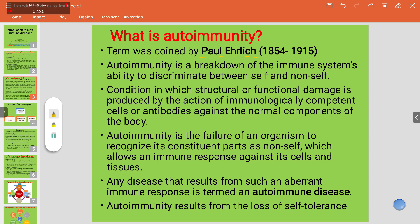Autoimmunity is a breakdown of the immune system's ability to discriminate between self and non-self. These are conditions where structural or functional damage is produced by the action of immunologically competent cells or antibodies against the normal components of the body. Autoimmunity results from the loss of self-tolerance.